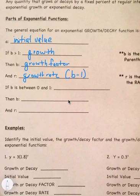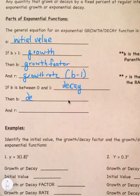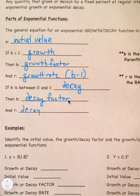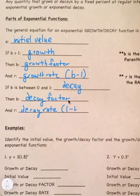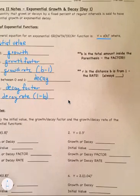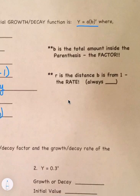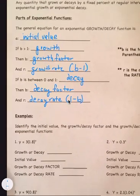If b is between 0 and 1, we say it is decay. Then b is the decay factor, and r is our decay rate — instead of b minus 1, it is 1 minus the b value. Because b is between 0 and 1, r is the distance b is from the number 1, and it's always positive. That's why we switch from b minus 1 to 1 minus b.